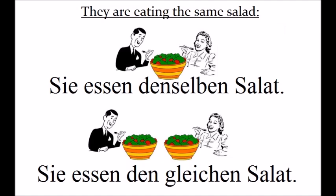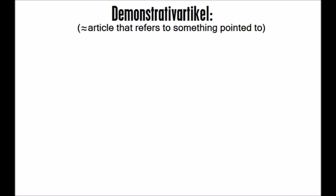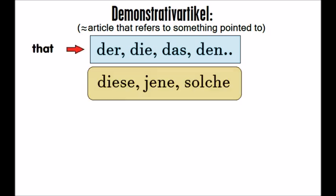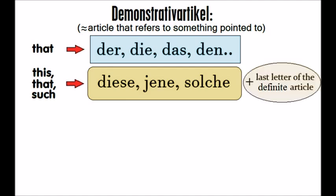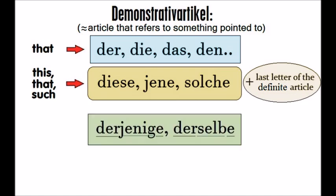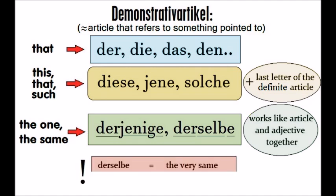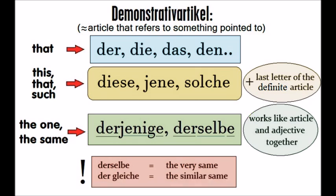Alright, let's repeat what we've learned. Demonstrativartikel is an article that refers to something pointed to. The basic one is the emphasized definite article: der, die, das, den, and so on. 'Diese', 'jene', and 'solche' — meaning 'this', 'that', and 'such' — are declined by adding the last letter of the definite article at the end. 'Derjenige' and 'derselbe' — 'the one' and 'the same' — work like a combination of an article and an adjective. 'Derselbe' means the very same, while 'dergleiche' means the similar same.